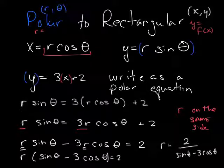R is just equal to 2 over sine of theta minus 3 cosines of theta. The right side of the screen is off. I see that.